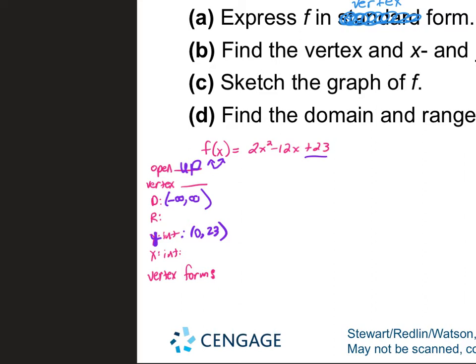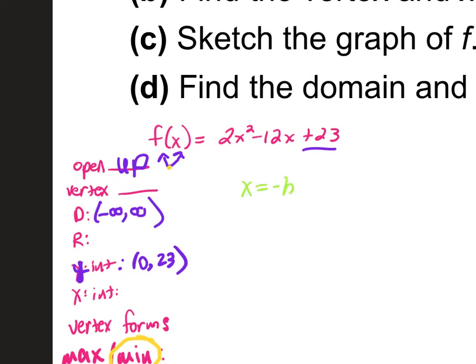We just figured out three things just by looking at the problem. If there's a maximum or minimum — since it's an upward parabola, there's a minimum point. To find the vertex, we use that tiny formula: x equals negative b over 2a. Our a is positive 2, our b is negative 12, and our c is 23.